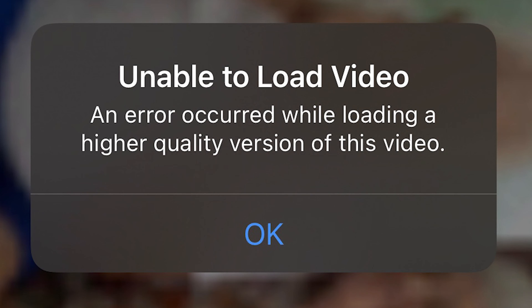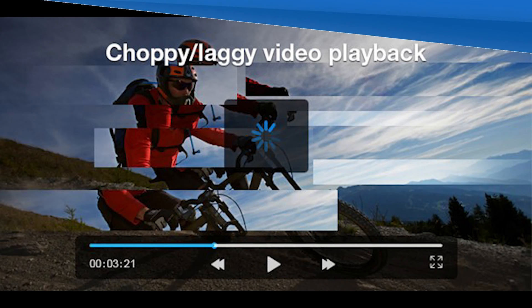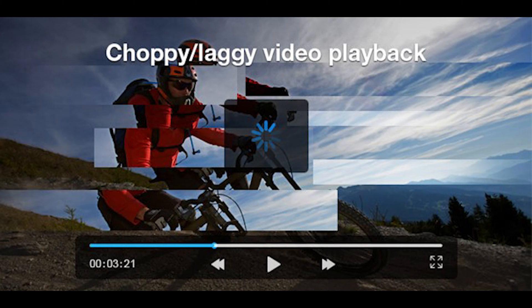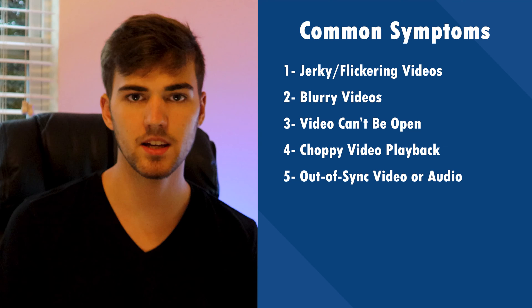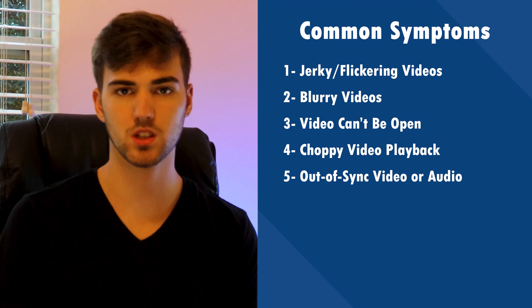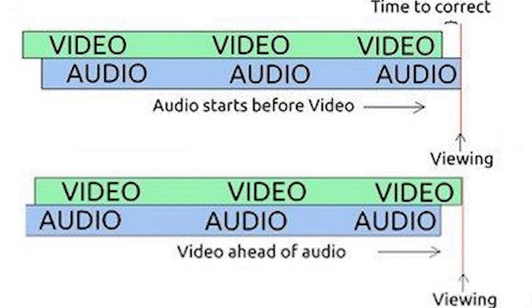Videos can't be opened — in many situations, video corruption can be identified without even using a media player. These are the cases when the video file won't even play and will display an error code instead. Choppy video playback, while commonly related to media player compatibility issues, can also occur if the video is damaged. Out of sync video or audio is the most common indicator of video corruption — if your audio is out of sync, for example the audio is playing slower than the video, it's mostly possible that the video is corrupt.